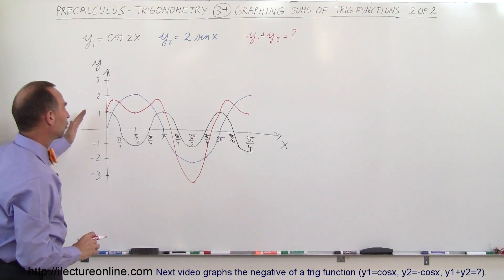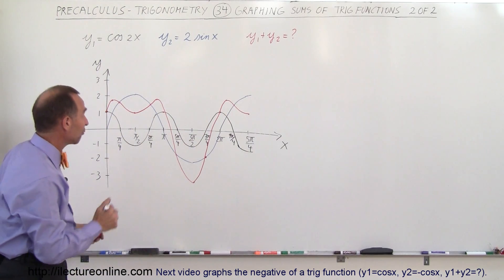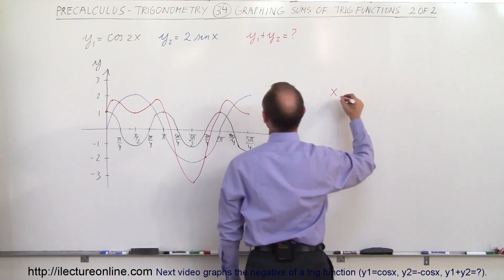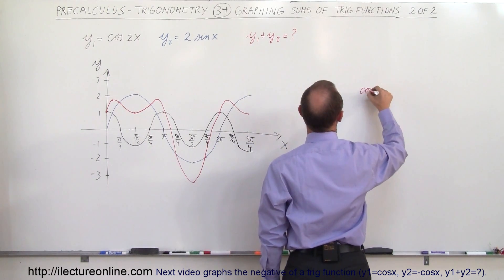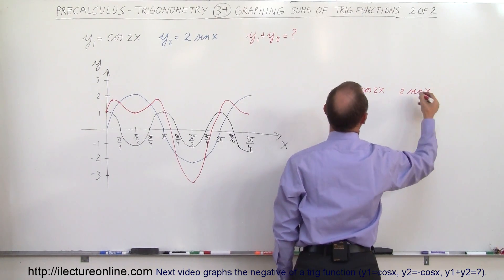So again, this is an approximate graph of the sum of the two together. If you want an exact graph, what you want to do is set up a table of values. So you set up an x, and you set up the cosine of 2x, and then you set up 2 times the sine of x, and you go like this.